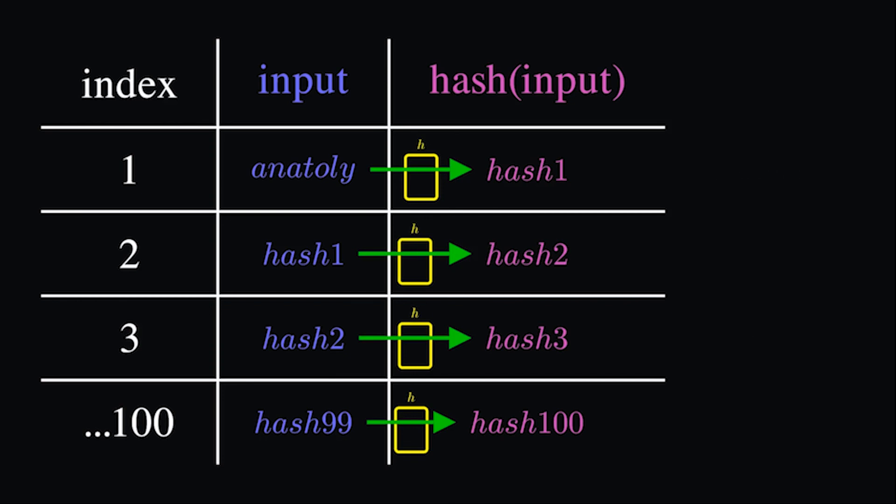With all validators producing a proof of history, they can trustlessly exchange leadership according to schedule without communicating. By verifying V1's published proof of history, anyone can confirm that V1 started and finished publishing transactions at the correct time.